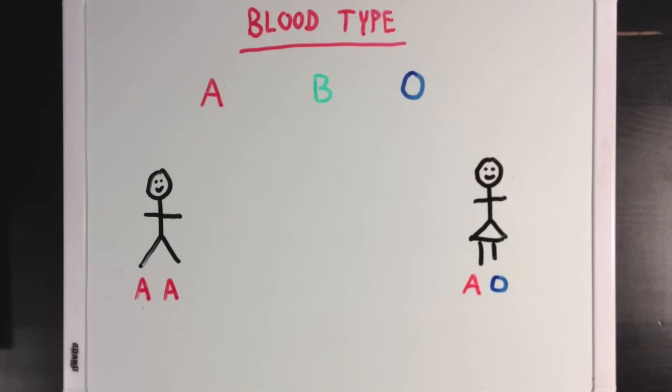Now for the guy, if he has both alleles coding for blood type A, then it's pretty clear that when we check his actual blood type, it will be A. But for the girl, we're not so sure since she has one of each.